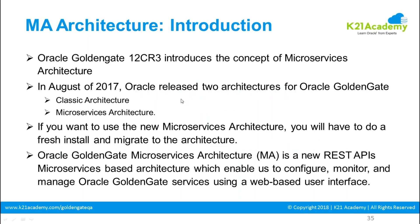Oracle released two architectures for Oracle Golden Gate: classic architecture and microservices architecture. Classic architecture is the existing one, and now they have introduced the microservices architecture.